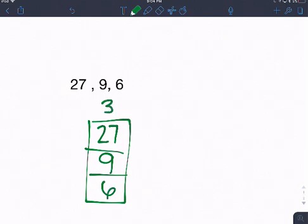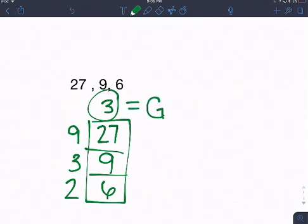And 3 goes into all three of these. 3 times 9 is 27. 3 times 3 is 9. And 3 times 2 is 6. And nothing goes into all three of those evenly except for 1. So my greatest common factor is 3.